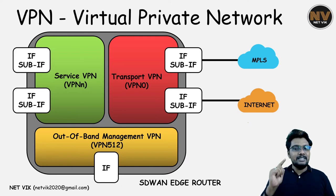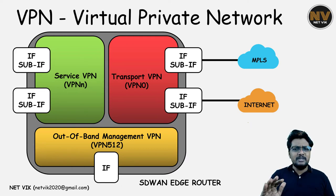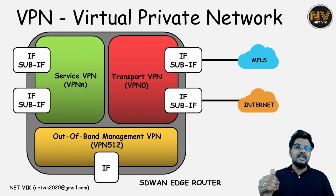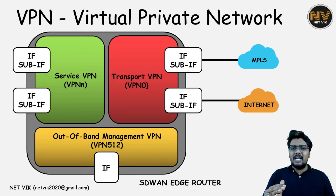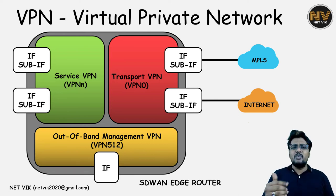The transport VPN is where we terminate all our WAN links, whether it is MPLS or Internet link. They all get terminated on this VPN if they are going to act as an SD-WAN transport. VPN0 number is dedicated to the transport VPN, and we always have only one transport VPN at any given time.